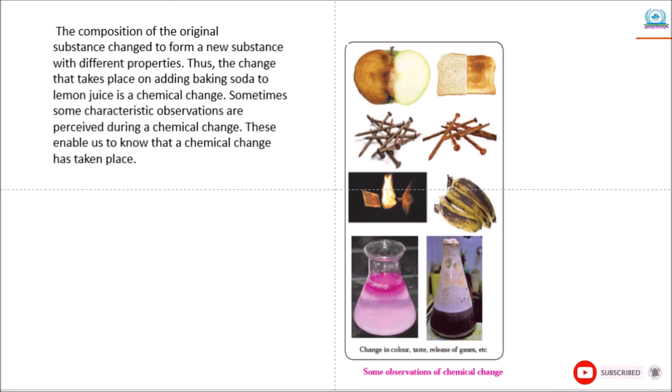During any of these chemical changes, the composition of the original substance changes to form new substances with different composition and properties. You can see different pictures given here: rusting, ripening, spoiling, and bubbles in the conical flask.